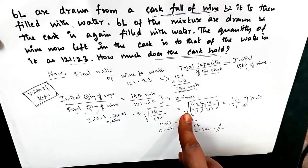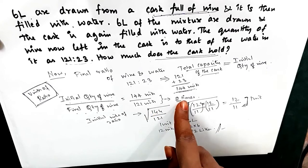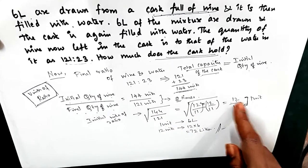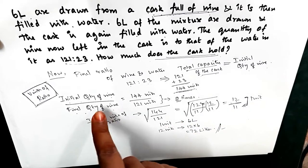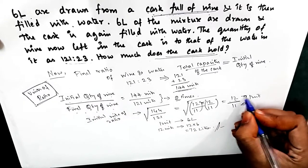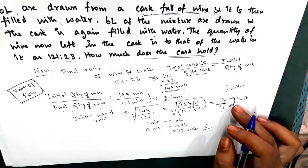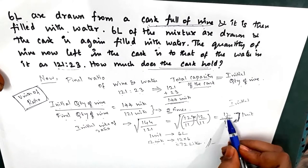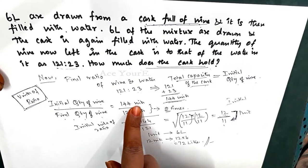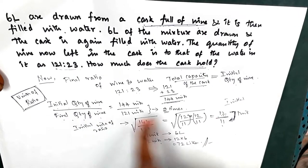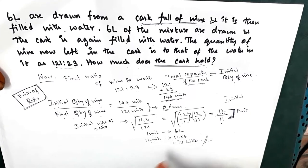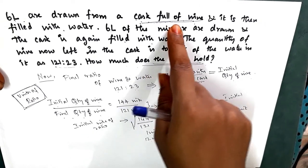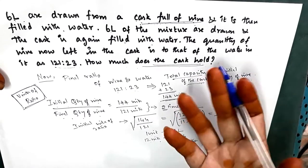If done four times take the fourth root; if five times take the fifth root. Taking the square root of 144/121 gives 12/11 — these are squares of 12 and 11 — so 12 to 11 is the ratio of initial to final quantity of wine. When 6 liters were drawn we get a difference of one unit, so one unit equals 6 liters. The 12 units comes from our assumption of 144 units; taking the square root gave us 12 as the initial quantity of wine. So 12 units = 12 × 6 = 72 liters was initially present, which is the same as the capacity of the cask.